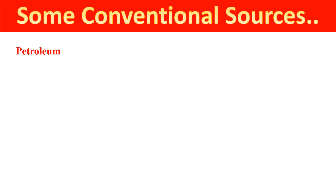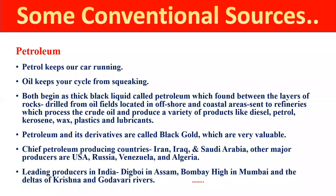Now let's think about petroleum, known as black gold. We use different types of vehicles and for those we require petrol. Petrol and oil both begin as a thick black liquid called petroleum. This petroleum can be found between layers of rocks, and we have to drill a well to extract it. Petroleum produces a variety of products like diesel, petrol, kerosene oil, wax, plastics, and lubricants.